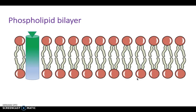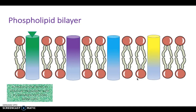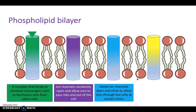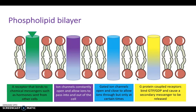To simplify that a little bit more: we can have a receptor that binds to chemical messengers such as hormones sent from other cells. We can have ion channels that are constantly open and allow ions to pass in and out of the cell. We can have gated ion channels, which only open selectively at certain times when the gate is charged to a certain level. And we can also have G-protein coupled receptors, which bind GTP and GDP and cause a secondary messenger to be released inside the cell.